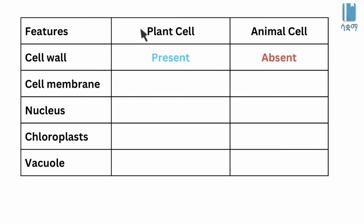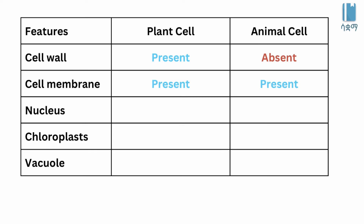Cell wall: present in plant cells, absent in animal cells — we do not find the cell wall in animal cells. Cell membrane: present in both plant and animal cells.